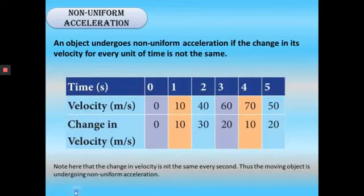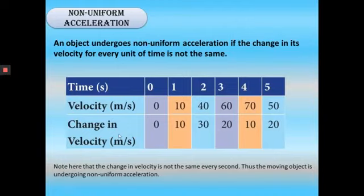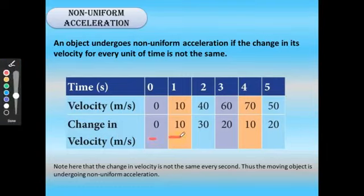An object undergoes non-uniform acceleration if the change in its velocity for every unit of time is not the same. Looking at the table, the change in velocity is not the same every second; it changes as 0, 10, 30, 20, 10, and 20. Thus the moving object undergoes non-uniform acceleration.